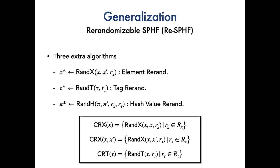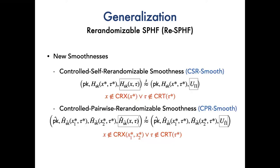Similar to the classification of randomization, we redefine two types of smoothness for RESPHF as below. The controlled self-randomizable smoothness says that conditioned on fixed pK and the hash value for any non-language element x star and any tag tau star, for any non-language element x and tag tau, the hash value is statistically indistinguishable from the uniform distribution over the space pi. It is required that the x does not belong to CRx_x star or tau does not belong to CRt_tau star.